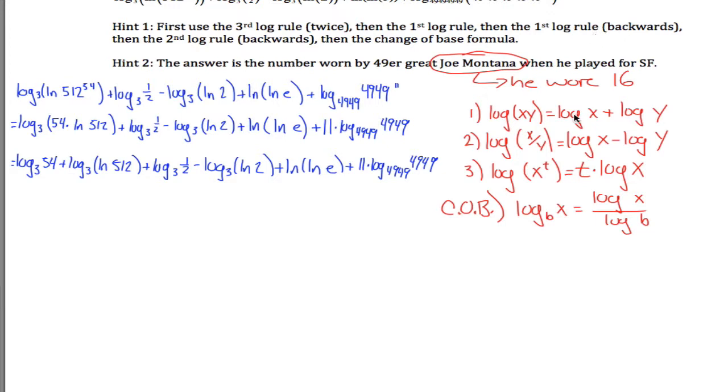Alright, so that was the first log rule. Now it says use the first log rule backwards. So that's saying look for two logs being added together that would be beneficial to have them multiplied. So let's see here. I have a lot of log base 3's, but not that many would be beneficial to multiply. For example, 54 times the natural log of 512, that's not going to help at all. But 54 times 1 half, that would help. If I put these two together—maybe I need to underline these—because this guy and this guy, I can say that's the log base 3 of 27: 54 times 1 half. Sure, let's do it all in one line.